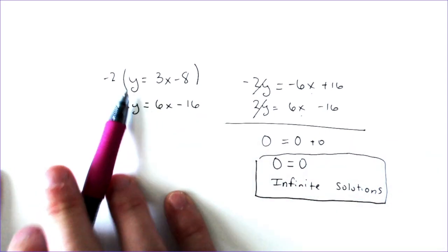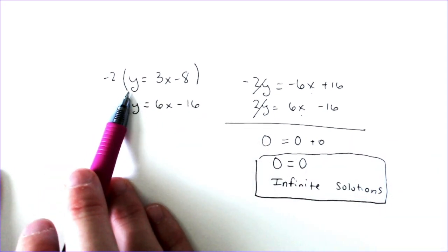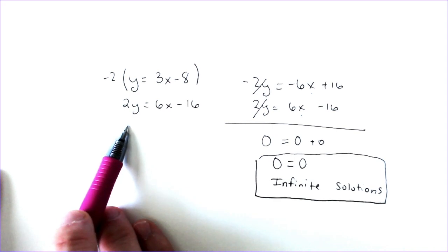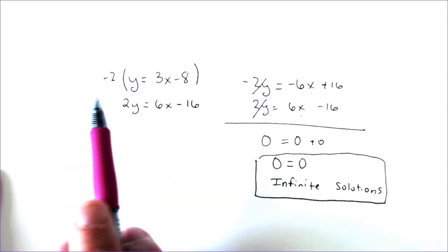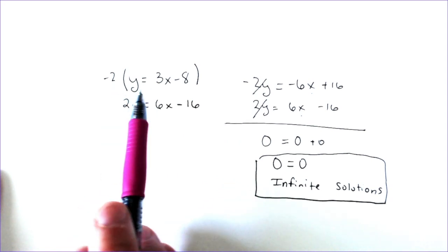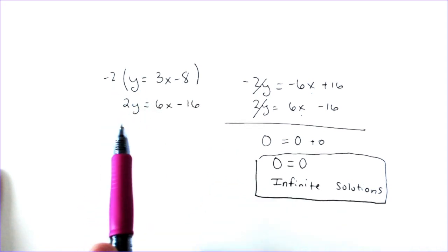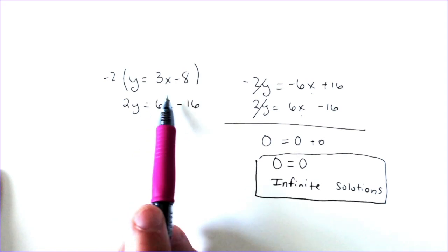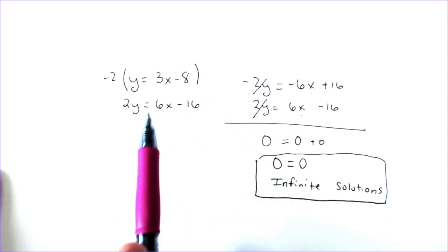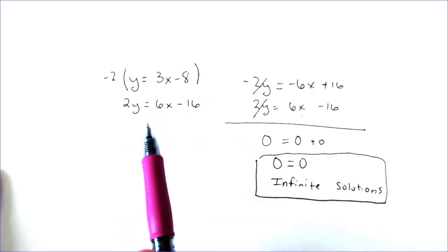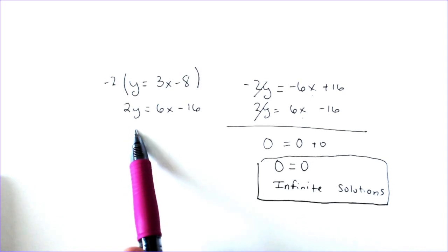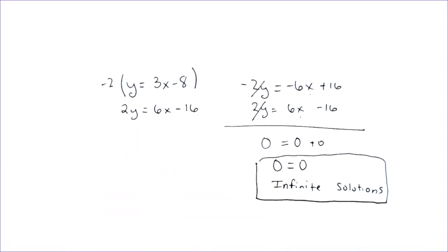So here, if we look at these two equations, the only difference between the top equation and the bottom equation is that the top equation is just half as much. If we doubled everything, if we didn't multiply by negative two, if we multiplied by a regular two, we would get 2y, 6x, and negative 16, which is the same equation as the bottom one. And because these two things are essentially the same, you have infinitely many solutions.